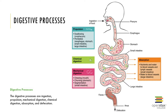We also have hormonal control involved in digestive processes. This is where the endocrine system and the nervous system come into play. A lot of times we refer to that as the neuroendocrine system. There are a variety of hormones involved in these processes.